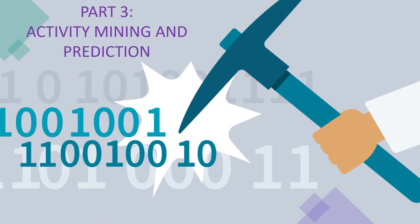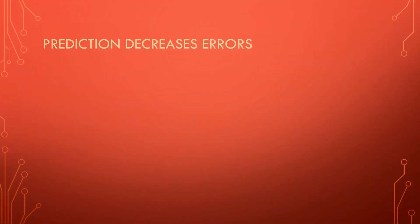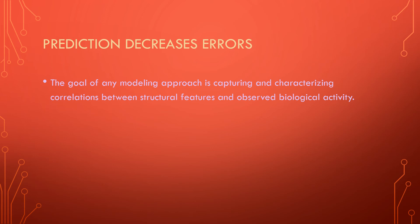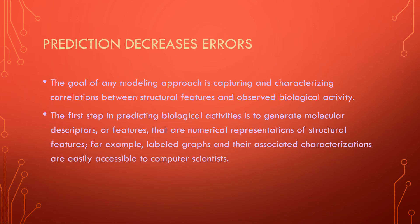Part 3: Activity Mining and Prediction. What can we expect from ChemInformatics? Why is ChemInformatics important, and how can it contribute to science? The answer is that prediction decreases errors. The goal of any modeling approach is capturing and characterizing correlations between structural features and observed biological activity. We can design a drug in a lab, which may be costly and prone to failure. Rather than doing that, we can do it in a computer, which gives us the structural features and observed biological activities, allowing us to predict what the drug can do, identify its weaknesses, and then improvise the drug. The first step in predicting biological activities is to generate molecule descriptors or features, which are numerical representations of structural features, such as label graphs and their associated characterizations, which are easily accessible to computer scientists.